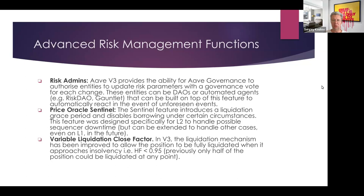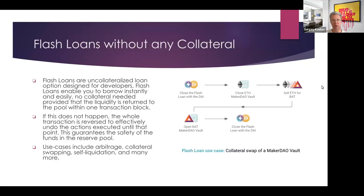Flash loans, which existed in Aave V2, are also in V3. Flash loans are only possible on-chain. They allow you to take a loan for any amount available in the pool without collateral, do something with that loan, and then return it — all within one transaction and one block.